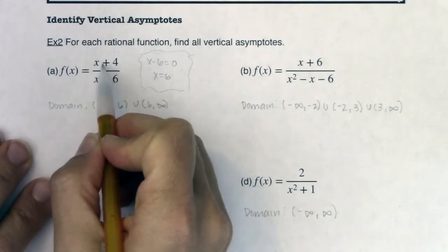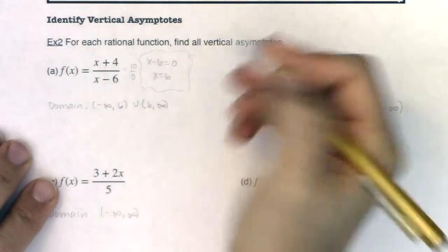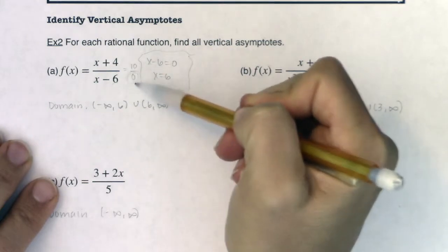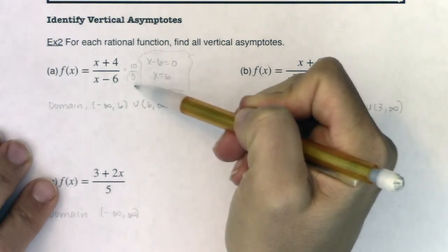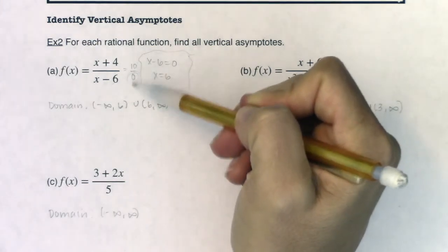Well, if I plug in six, I get six plus four, so really I'd be looking at ten over zero as a fraction, and I want you to see that only my denominator zeros out. All right, they didn't both zero out at the same time.